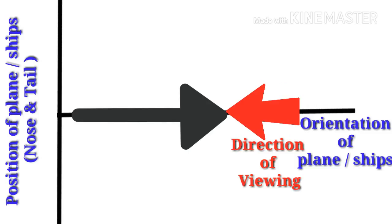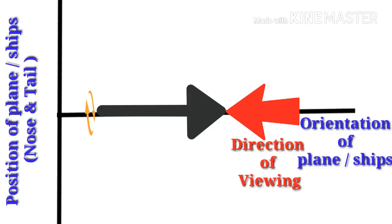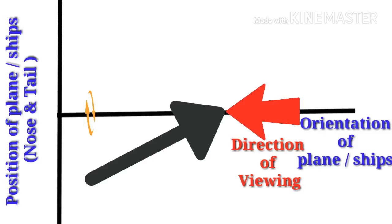For the other condition — when the plane or ship is viewed from the front (from the nose or bow) — a simple modification is needed: move the arrow in the opposite direction. Then the same conditions apply as before.